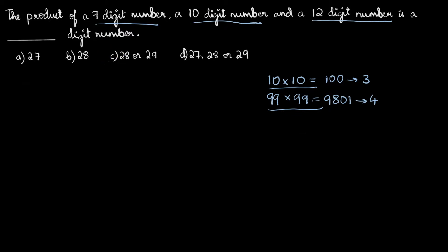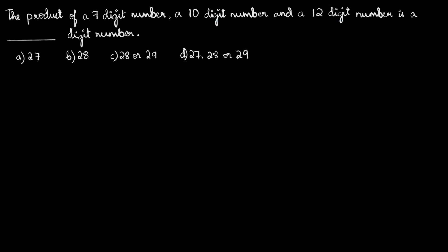This tells us the answer should be either C or D — the product should have a varying number of digits. Common sense suggests it should be D, since there are three numbers in play and there can be three possible outcomes. But let's verify that's actually the case.